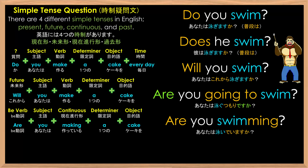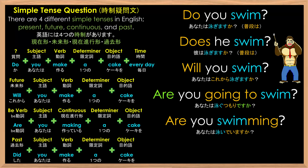Lastly, we have past tense question, where you put 'did' at the front of the sentence, as in: Did you make a cake? Another example is: Did you swim? And no matter the subject, it's always 'did'.